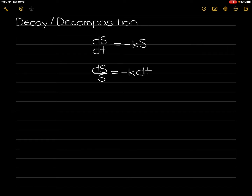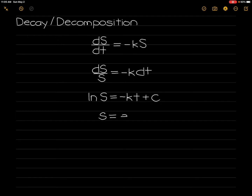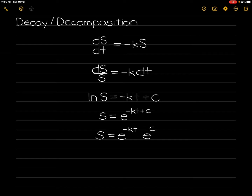Integrating both sides will give ln of s is equal to negative k times t plus c. So s is equal to e raised to negative k times t plus c, which becomes e raised to negative k times t times e raised to c.